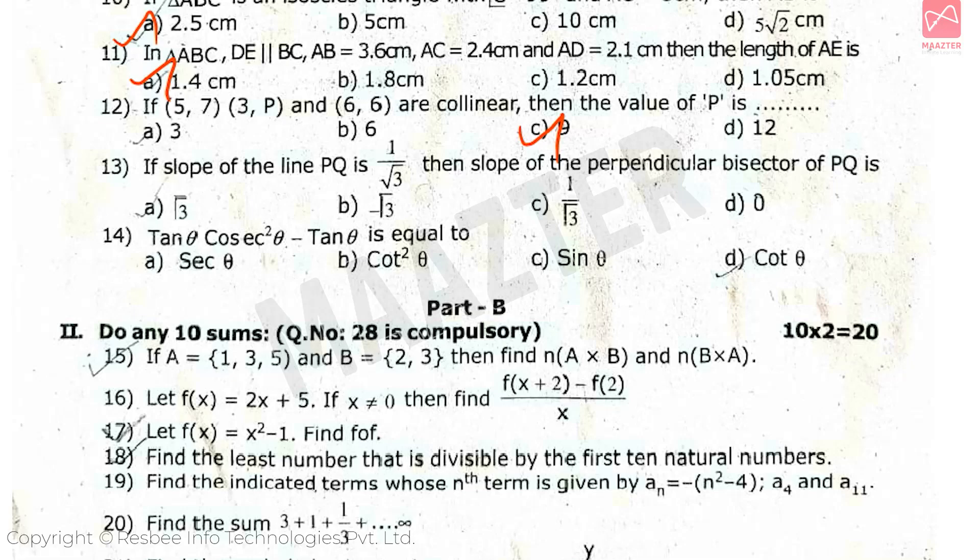Next, if slope of the line P is 1/√3, then the slope of the perpendicular bisector of P is, answer is Option B. Next, tan θ cos²θ - tan θ is equal to, answer is Option D.